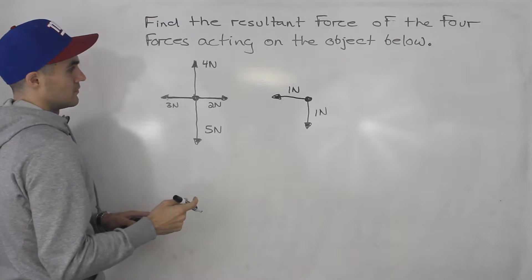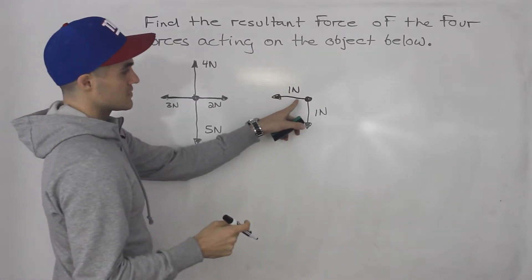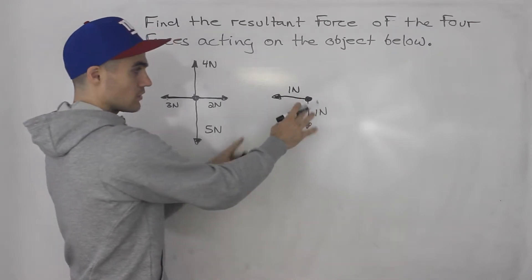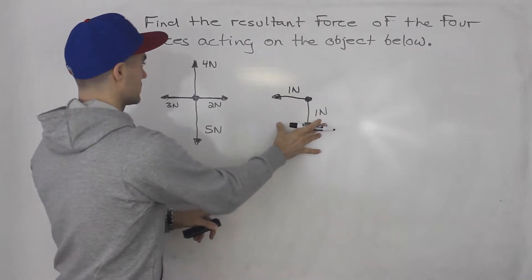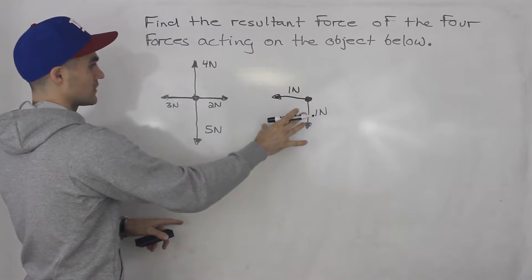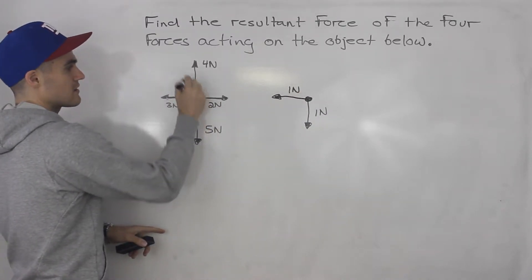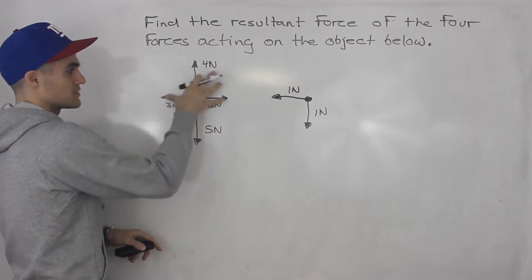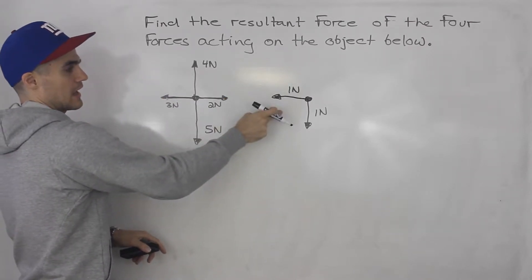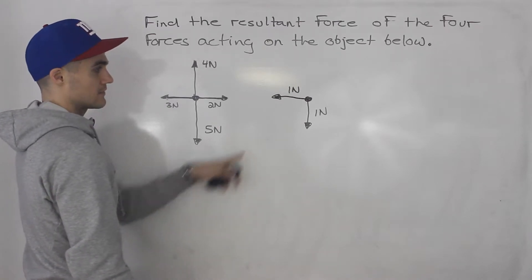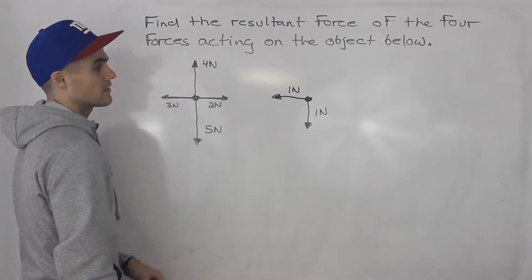So a force of one newton this way and one newton down on this object is the exact same. The resultant of this object, where this object ends up moving, is going to be the exact same as if this object was being pulled by these four forces. So we took these four forces and switched it into two forces. And this is just a lot easier to deal with.